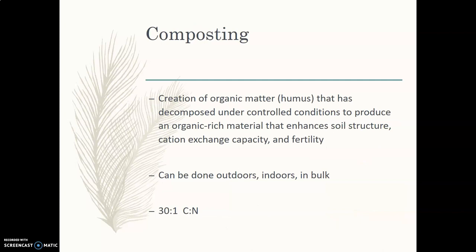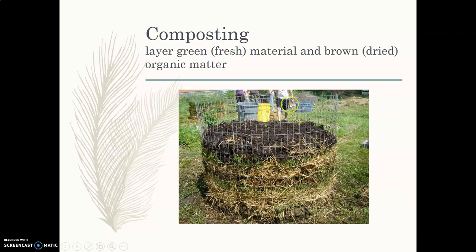Composting is the creation of organic matter, such as humus, that has decomposed under controlled conditions to produce an organic-rich material that enhances soil structure, cation exchange capacity, and fertility. It can be done outdoors, indoors, in bulk, or in your apartment. A big thing to know about composting is you want about a 30 to 1 carbon to nitrogen ratio — a lot more carbon than nitrogen. One way to achieve this is to layer brown materials, such as leaves or things that are no longer green, between your green material like your used vegetable scraps.